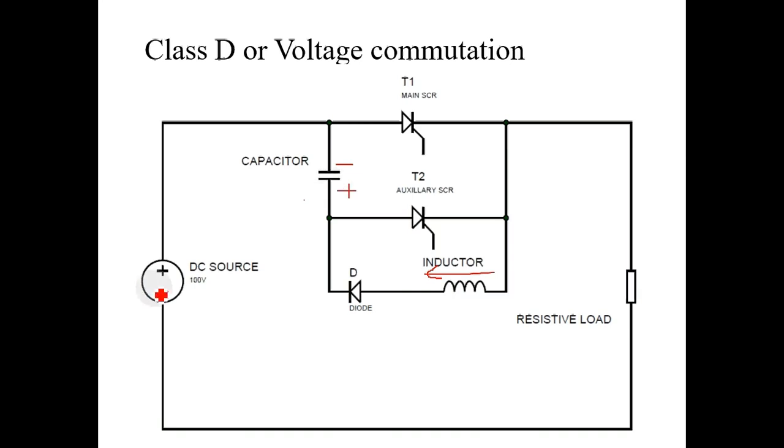Now, this will stop current through diode and inductor also. Now, current is flowing from DC source to main SCR, resistive load, and back to supply.